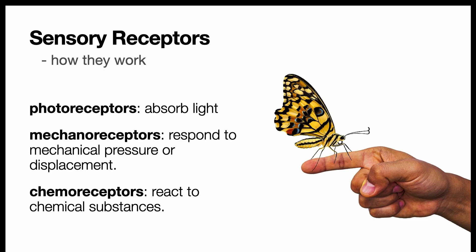Mechanoreceptors, which respond to mechanical pressure or displacement, as in touch and audition. And chemoreceptors, that react to chemical substances, as with gustation and olfaction. These functions of sensory receptors are what allows the process of sensory transduction to occur.